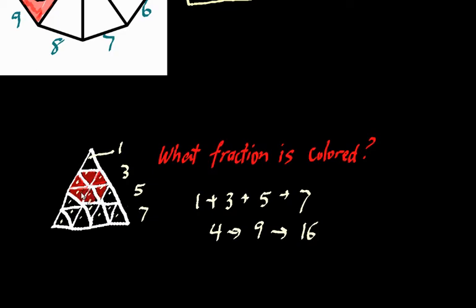Which ones are actually colored in red? Counting them out: 1, 2, 3, 4, 5, 6 small triangles colored in red. So we have 6 triangles colored out of 16 possible. It's important to note that these triangles are all equal-sized — some are upside down, some right-side up, but they all have the same size. So 6 sixteenths of these triangles are colored.